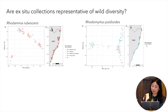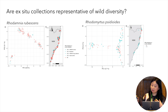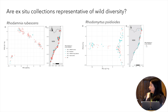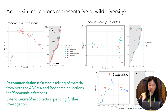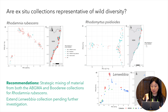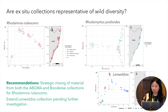The ex-situ collections of Rhodamnia and Rhodomyrtus are representative of wild diversity, which is great to see. However, the Rhodamnia Mount Annan and Boudere Botanic Gardens collections represent different parts of the species' genetic diversity, so we should strategically mix materials from both collections to maximise genetic diversity in conservation actions. The ex-situ collection of Lenwebia at Mount Annan is spread across the genetic diversity of main range, but doesn't extend to the genetic diversity present in other Lenwebias, so expanding the ex-situ collection may be recommended to capture further genetic diversity after follow-up investigation of that species complex.